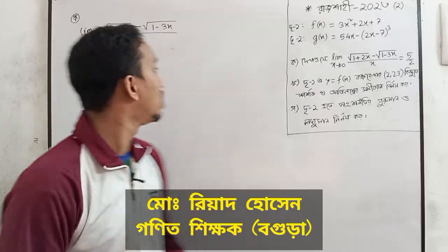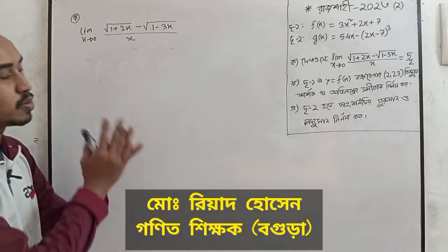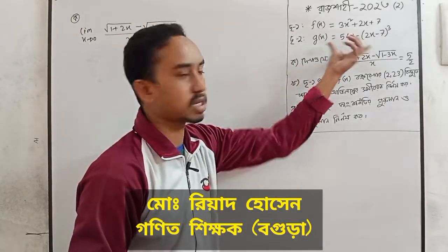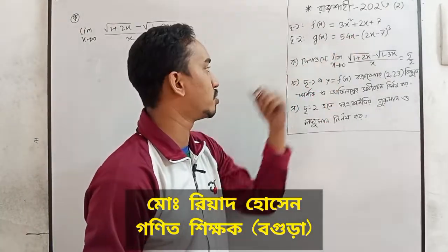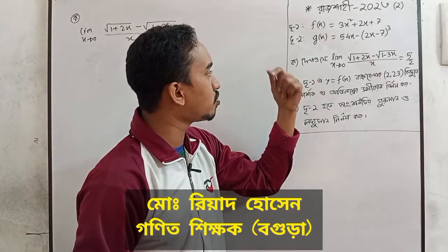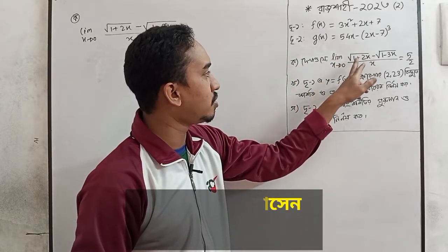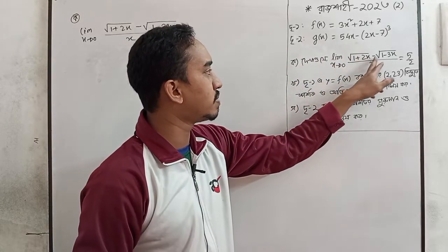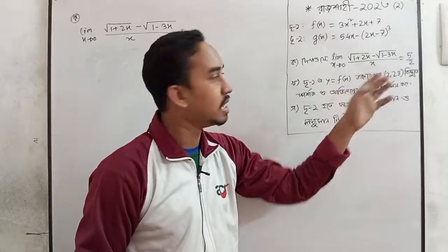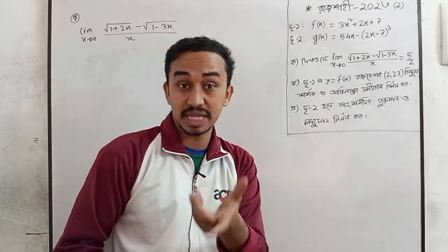First, we have two examples: f of x and z of x. We have a limit of 1 plus 2x minus root of 1 minus 3x. This is 5 by 2.